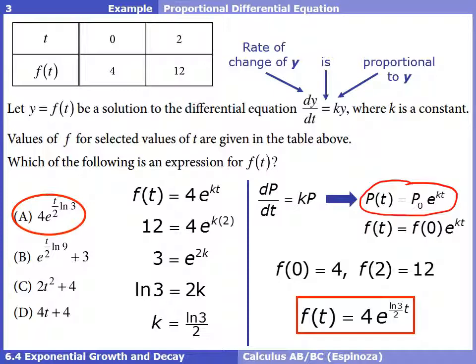Our solution — the expression we're looking for — is f(t) = 4 · e^((ln3/2)·t). We could have gone through the full process of solving the separable differential equation, but the key is identifying that this is a proportional differential equation giving us an exponential growth model. That matches answer choice A.